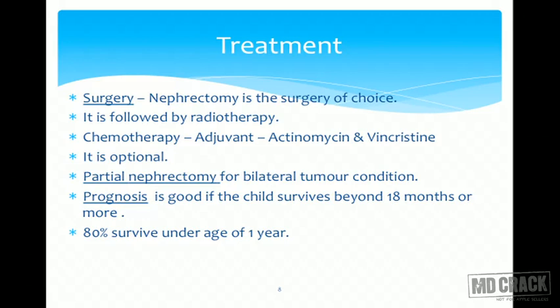Partial nephrectomy is reserved for bilateral tumors, because removing both kidneys is not compatible with life. In this situation, our aim is to salvage as much renal tissue as possible. A renal angiogram is needed to delineate exactly how much of the kidney is viable, so we can achieve a partial nephrectomy. Prognosis is considered good if the child survives beyond 18 months or more after surgery. This rule is known as Collins rule, a very good prognostic hallmark for Wilms Tumor.